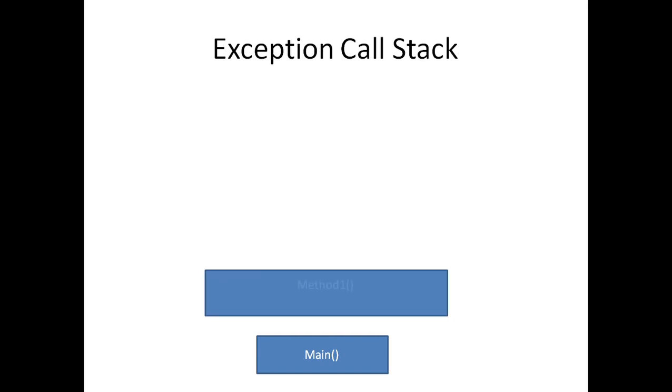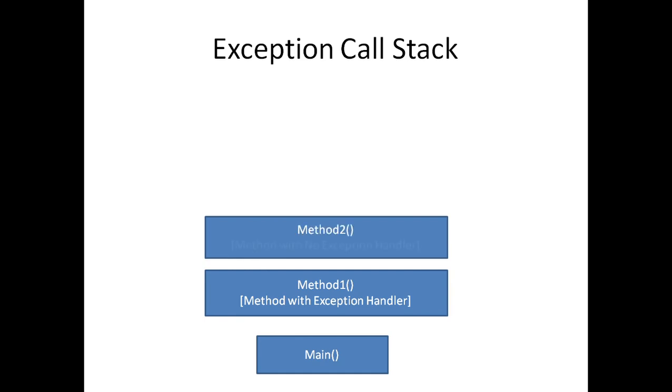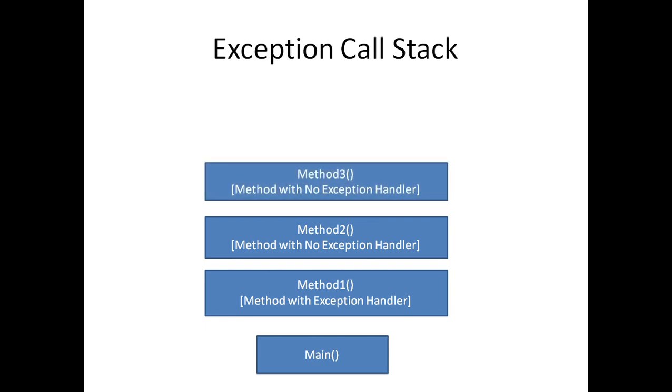Now we will see exception call stack. Let's suppose we have a main method. Inside main method, we are calling method one, and method one has an exception handler. Inside method one, we are calling method two; method two does not have an exception handler. Inside method two, we are calling method three; method three does not have an exception handler. And inside method three, we are calling method four when an exception occurs.